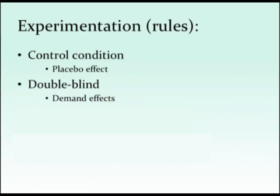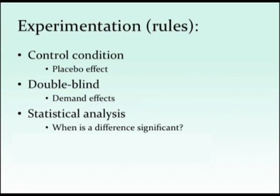The participant might respond the way they think you want them to — that's called the demand effect. If the participant thinks the violent video game will make them more violent, they might behave that way to please the experimenter. Similarly, if the experimenter knows a participant received the violent video game, they might judge that participant as more violent. These biases don't even have to be intentional — awareness of condition pushes people toward expected behaviors. We also need to apply statistical analysis to determine whether findings are real trends or just flukes.